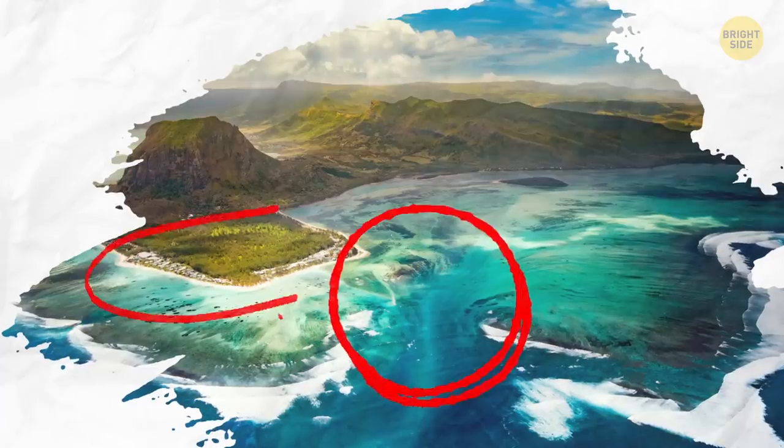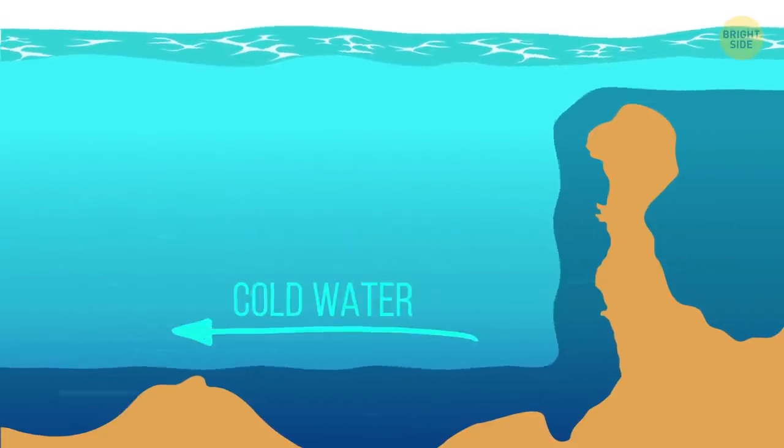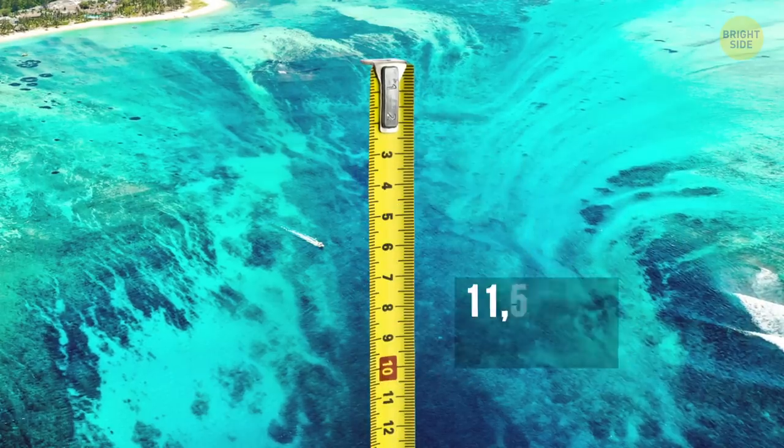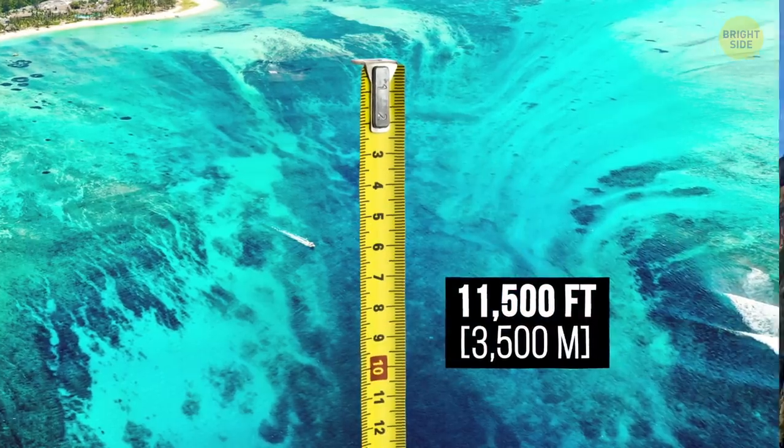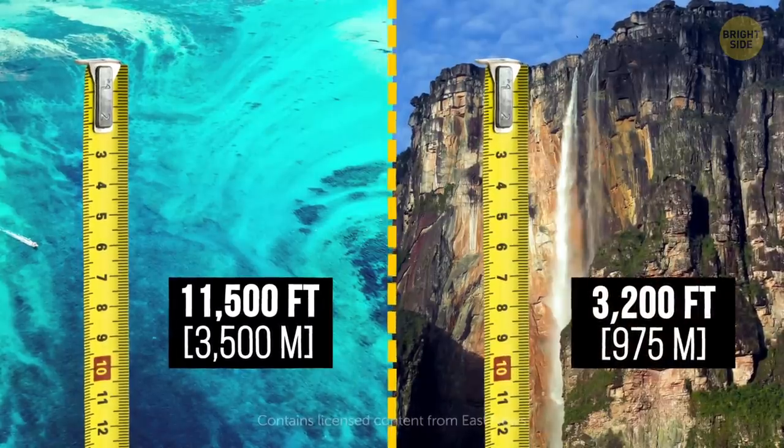The world's largest waterfall is underwater. This is the Denmark Strait Cataract, where cold, denser water from the Nordic seas flows under warm water from the Irminger Sea. Along the way, it falls 11,500 feet over an underwater ridge. That's more than 3 times the height of the tallest waterfall on land.